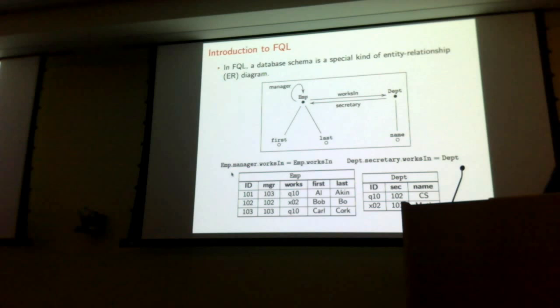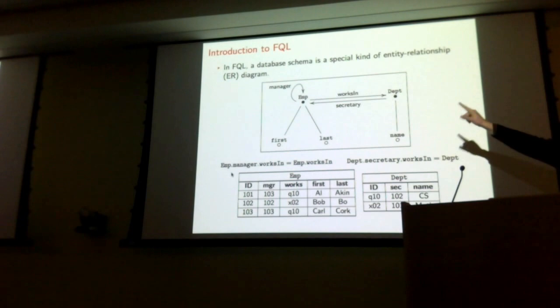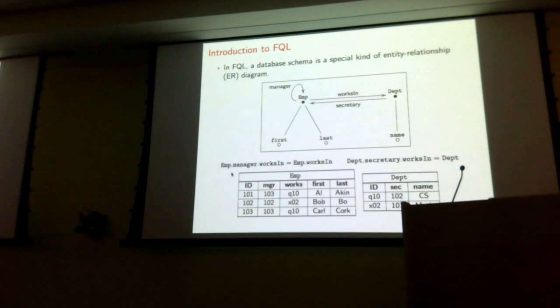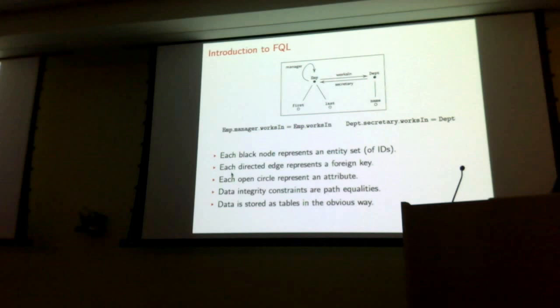The works column — that's a foreign key. Yes, so works, secretary, and manager are foreign keys, and first, last, and name are attributes. So in relational terminology, you have entity sets, foreign keys, attributes, and data integrity constraints.